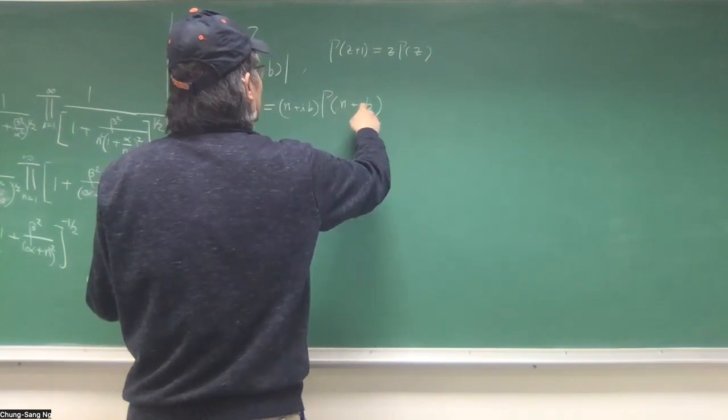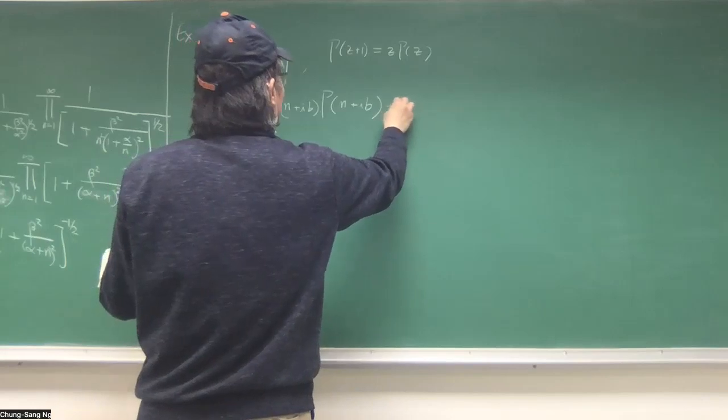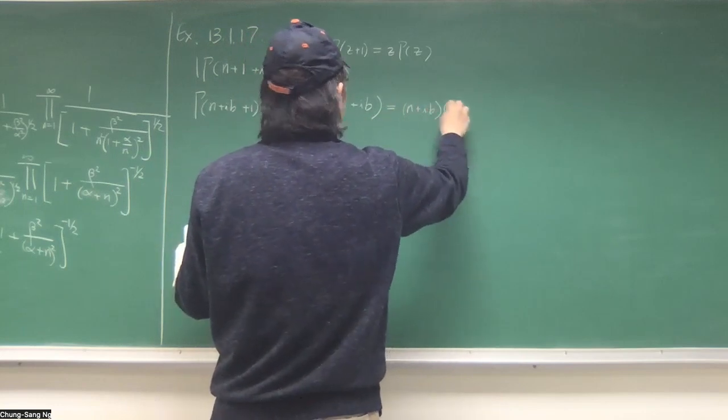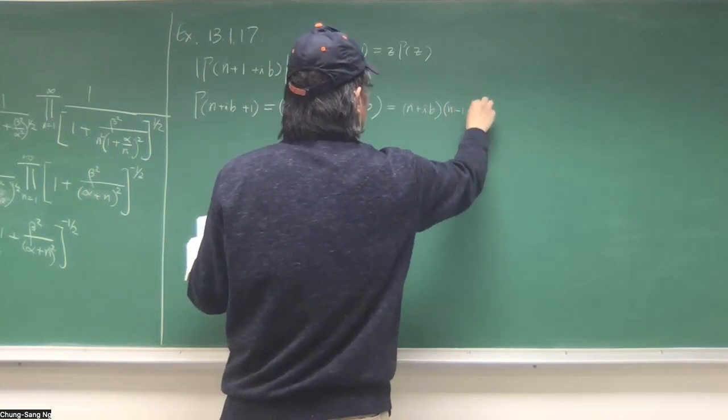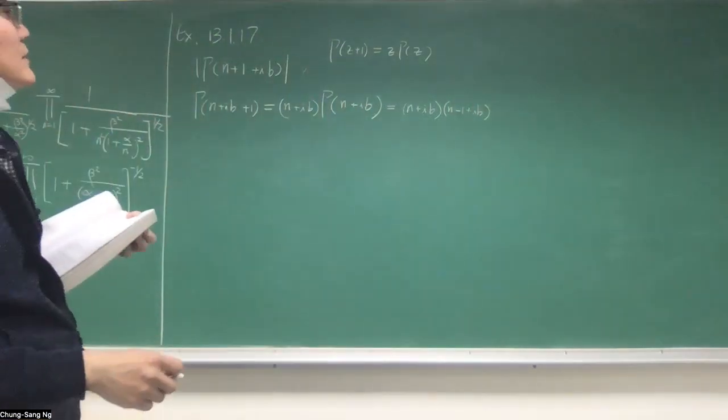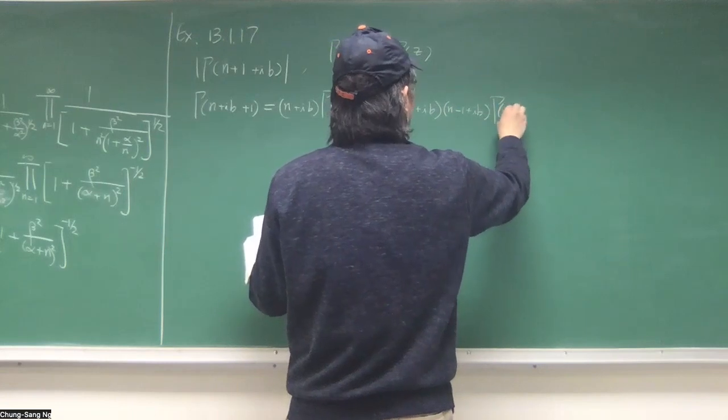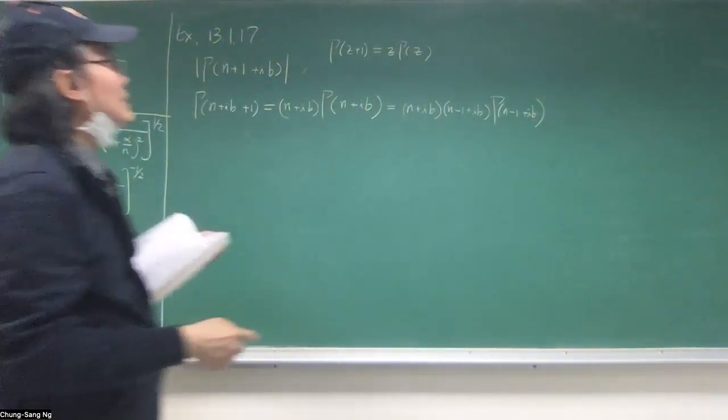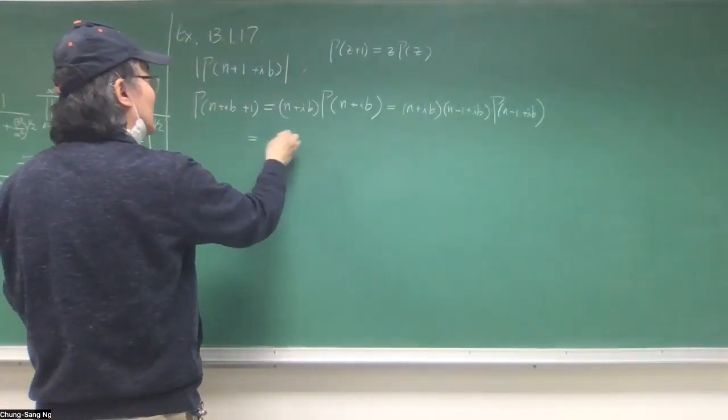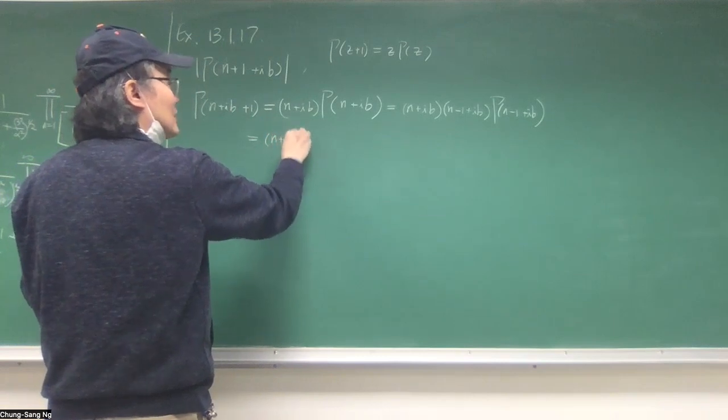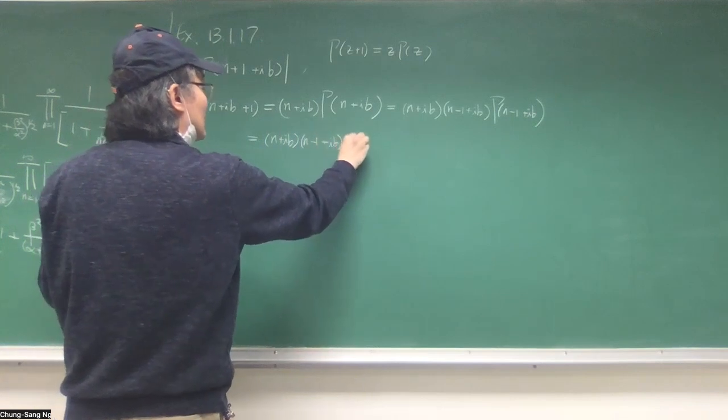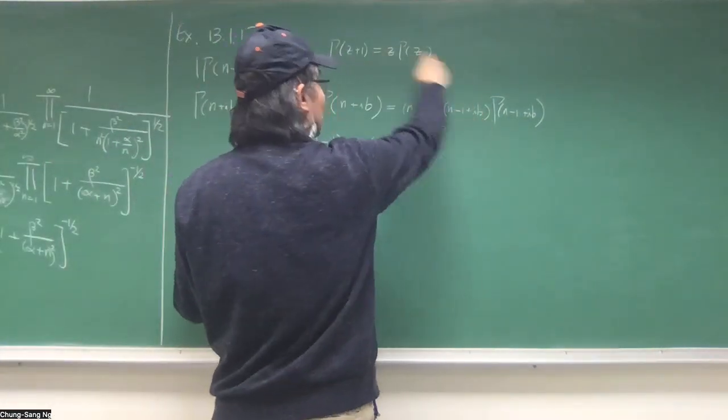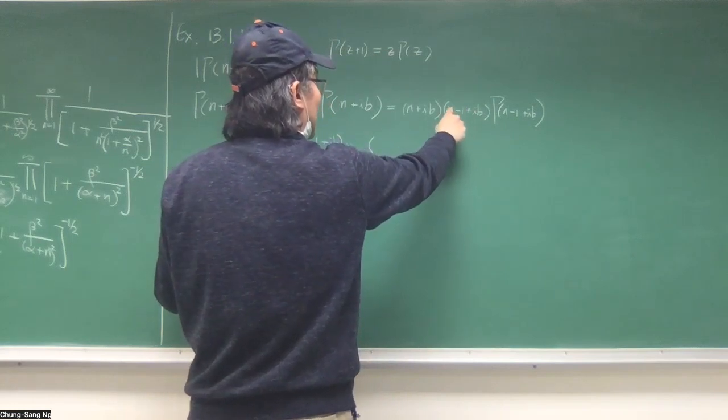So this N equals to N plus IB, and then N minus IB. And that becomes N minus IB, and so on, so we'll keep doing that. And we'll keep doing that until we get, so each time we apply this, this is reduced by one. I want to reduce it to n minus n.